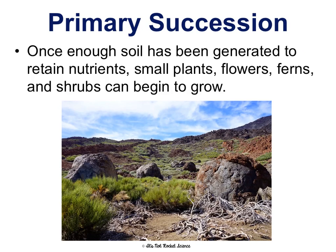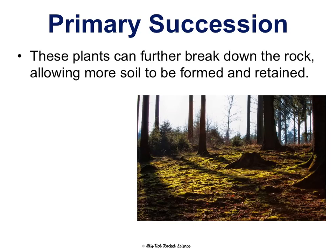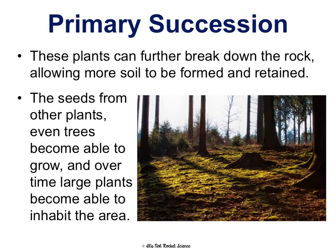Once there's enough soil and it has enough nutrients, small plants, weeds, grasses, flowers, ferns, and shrubs can begin to grow. They can grow pretty well because there are no trees at this point, so they have no competition for sunlight and other resources. These plants are going to further break down the soil and make it even more nutrient rich. The seeds from other plants and even trees can then begin to grow as the soil gets more and more rich and larger plants can inhabit the area.